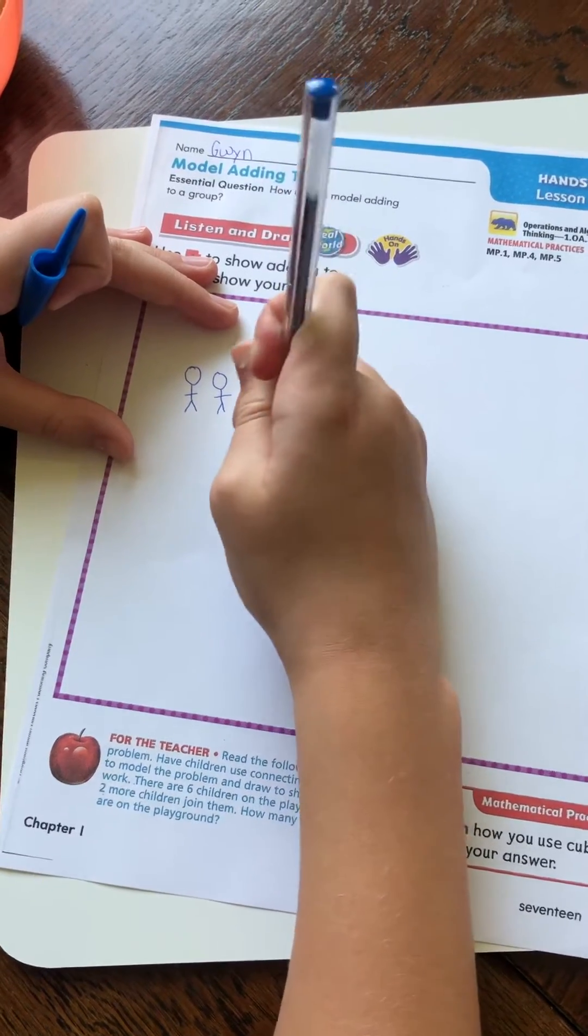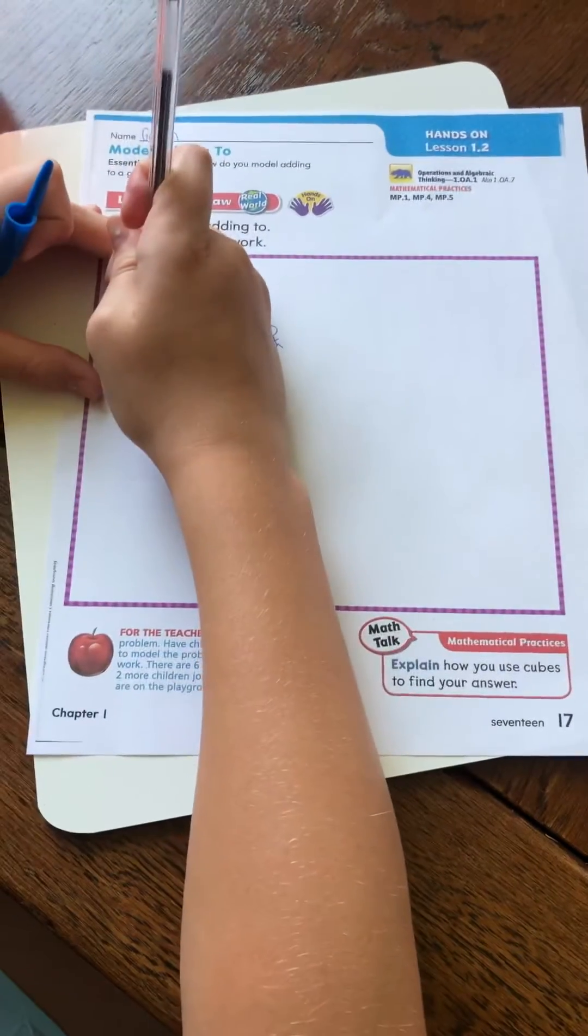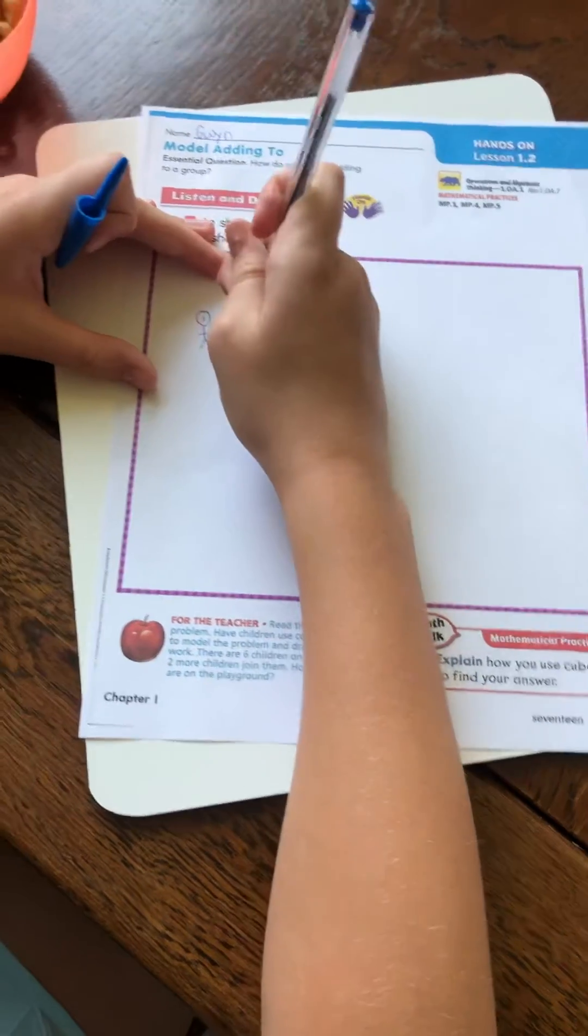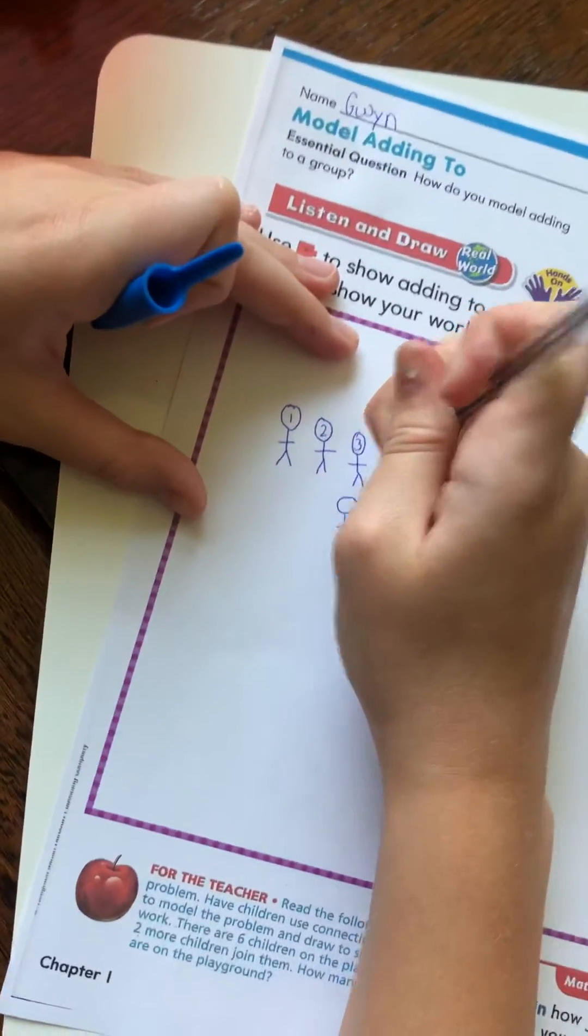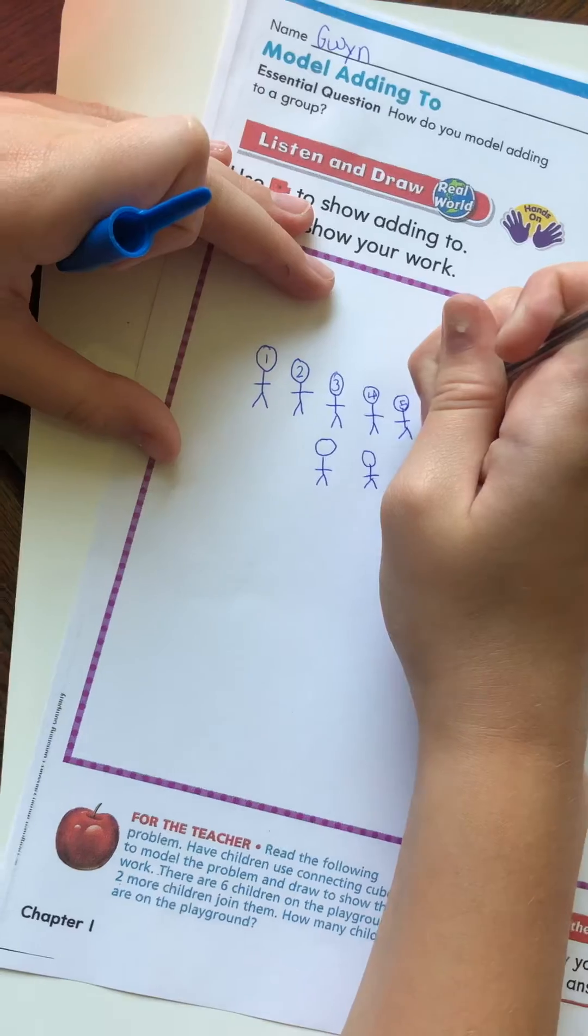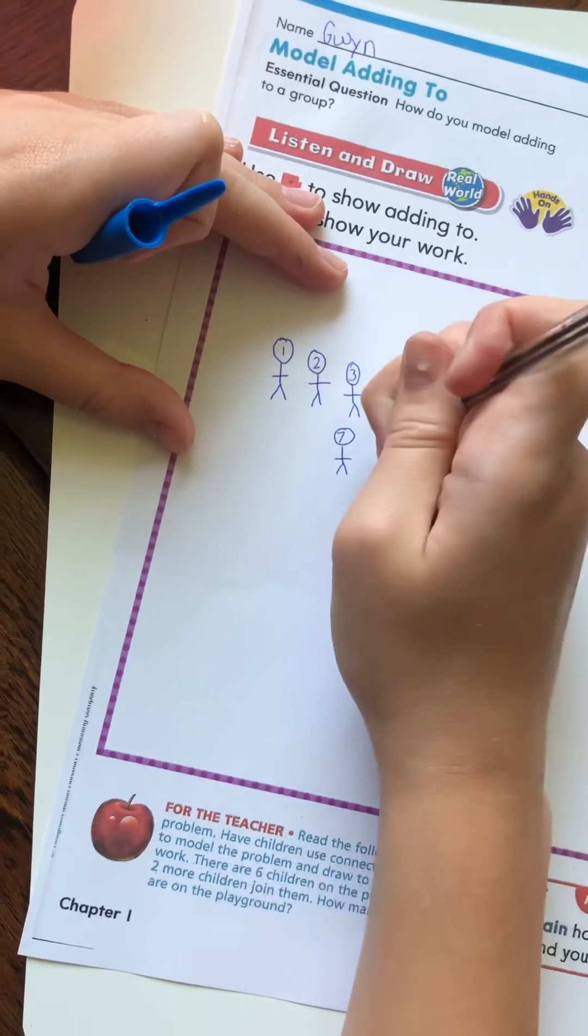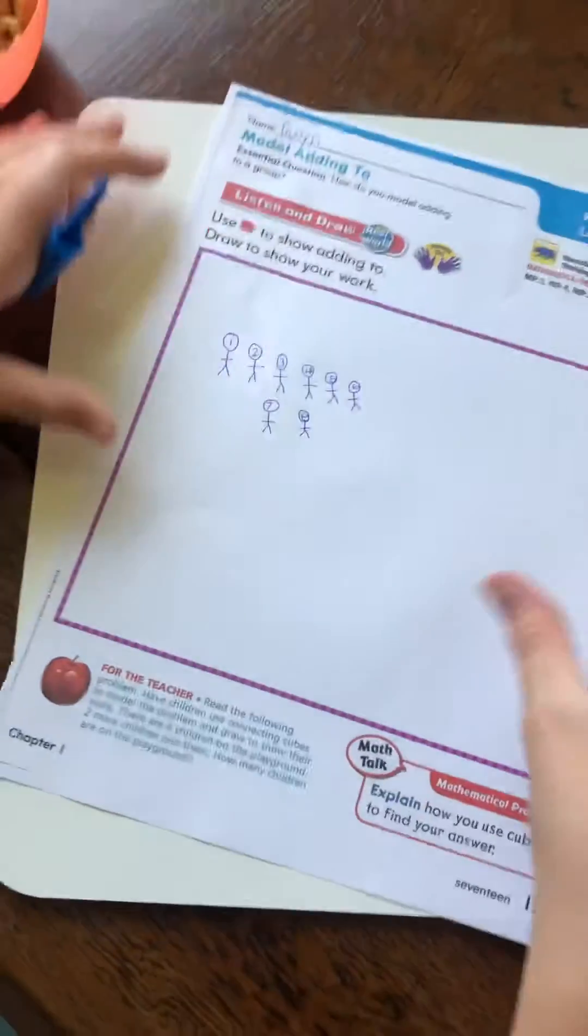So then once we count them we have one, two, three, four, five, six, seven, eight people. So that means six plus two is eight.